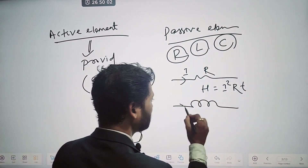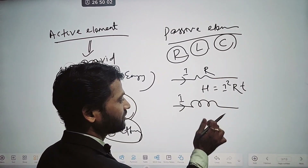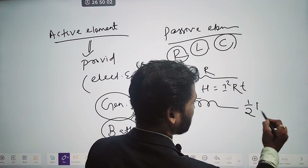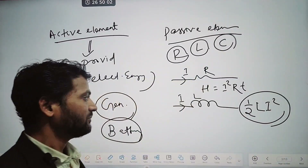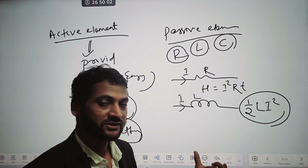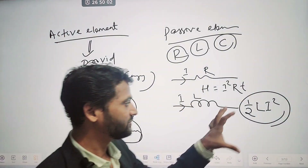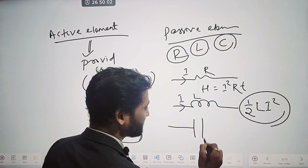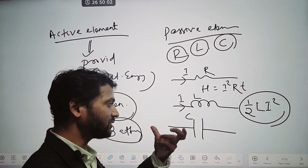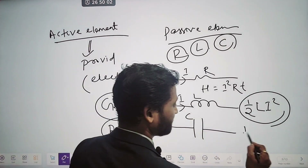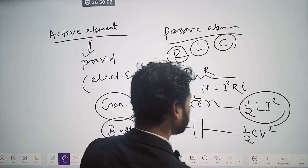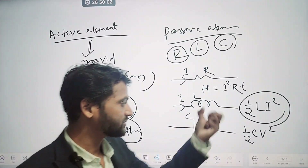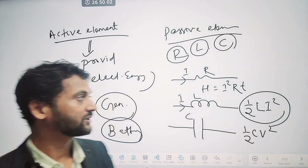Similarly, in case of inductor, when you provide some current to the inductor having inductance L, the energy will be stored in terms of magnetic field, which is ½LI². The inductor first gets energy from the power supply and then stores it in the magnetic field for further use. Similarly, a capacitor is a passive element — it stores energy in terms of electric field, which is ½CV². Whenever we provide a potential difference to a capacitor, it stores the energy in terms of electric field.